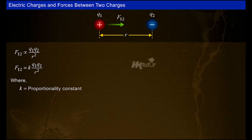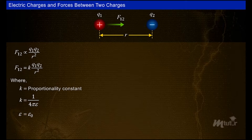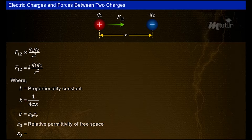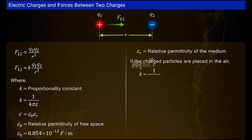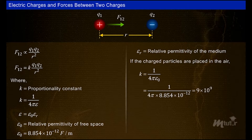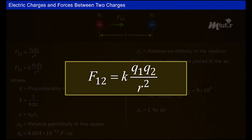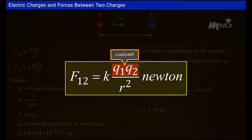Here k is the proportionality constant that accounts for the effect of the medium, given by k = 1 / (4πε), where ε = ε₀ × εᵣ. ε₀ is the permittivity of free space, equal to 8.854 × 10⁻¹² F/m, and εᵣ is the relative permittivity of the medium. For charges placed in air, k = 1 / (4πε₀) = 9 × 10⁹, since εᵣ = 1 for air. Force is measured in newtons, charge in coulombs, and distance in meters.